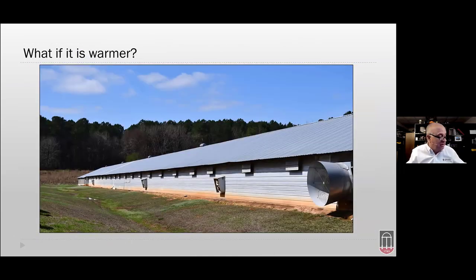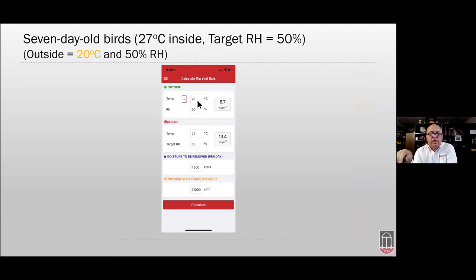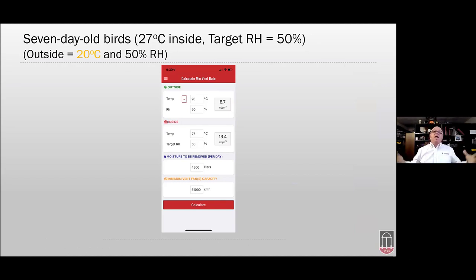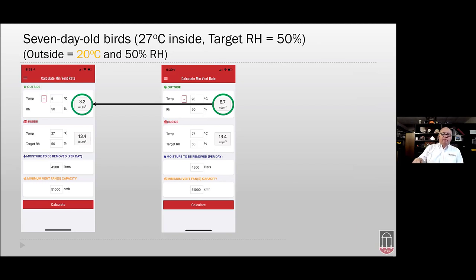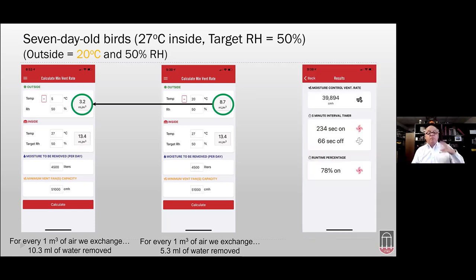What about warmer climates? Change the outside temperature to 20°C at 50% humidity with the same inside conditions. At 20°C and 50% humidity, there's 8.7 milliliters of water per cubic meter of outside air — much more than 3.2 at 5°C. There's less of a difference between inside and outside, so for every cubic meter exchanged we're only removing 5.3 milliliters, versus 10.3 before. When it's 20°C outside, minimum ventilation rates essentially have to double to remove the same amount of moisture.